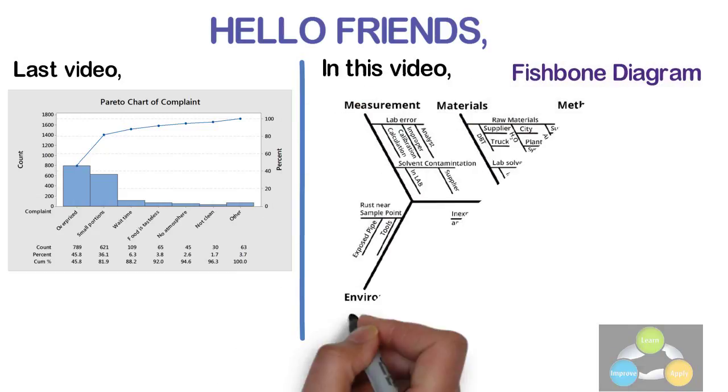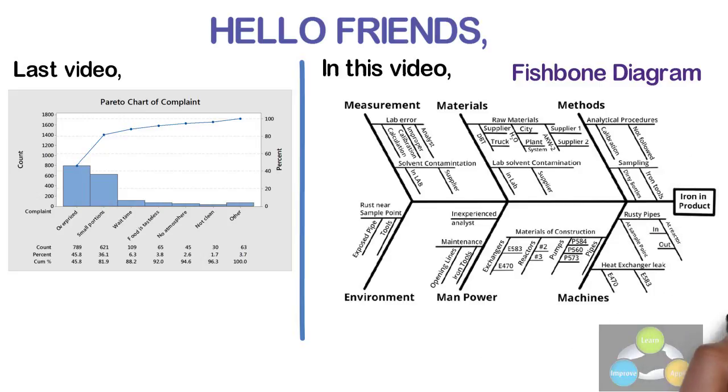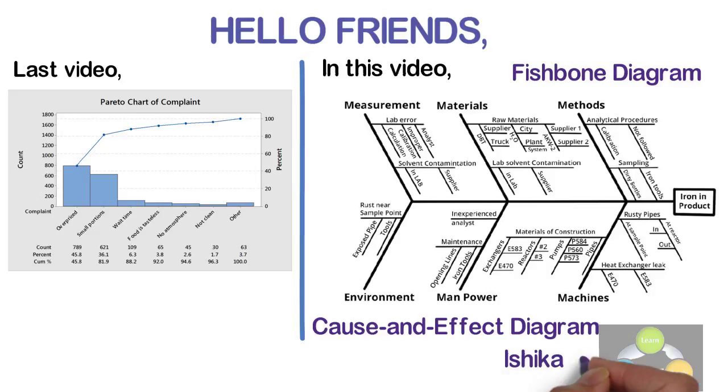It is known as fishbone diagram because of its shape, similar to the side view of a fish skeleton. It is also called cause and effect diagram and Ishikawa diagram.